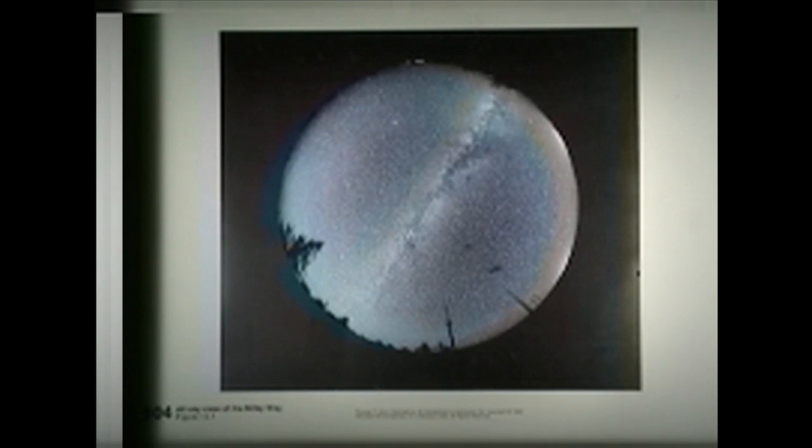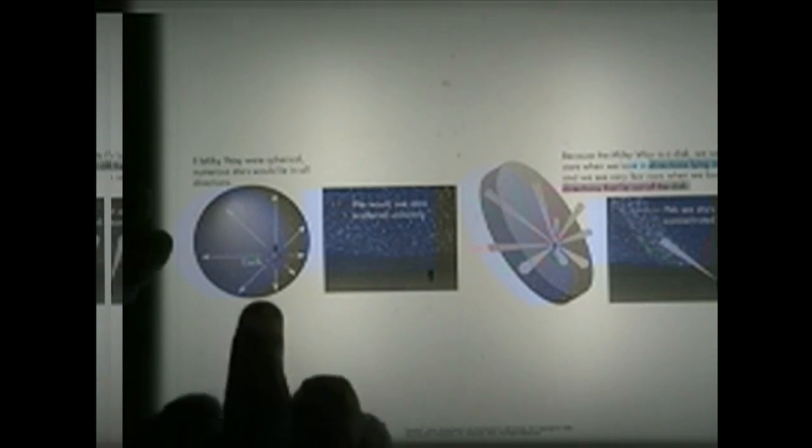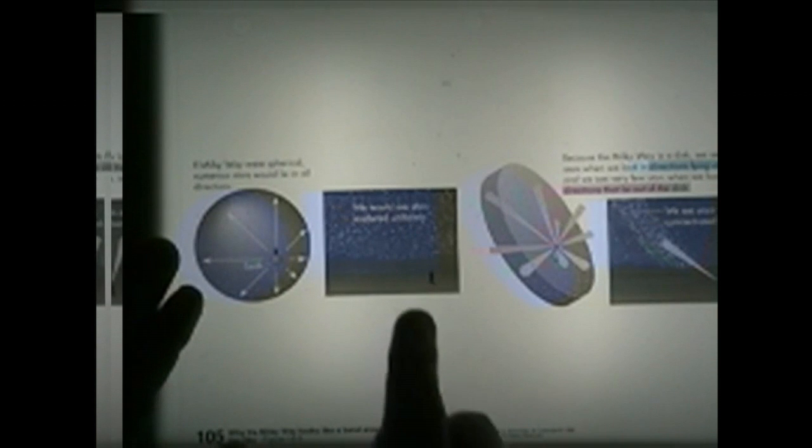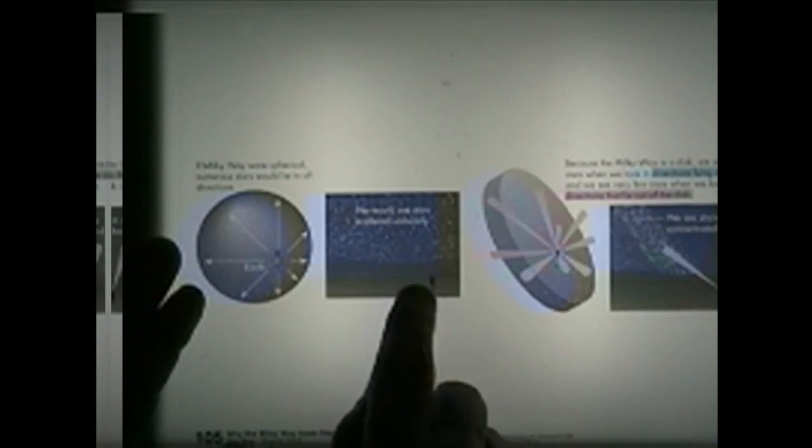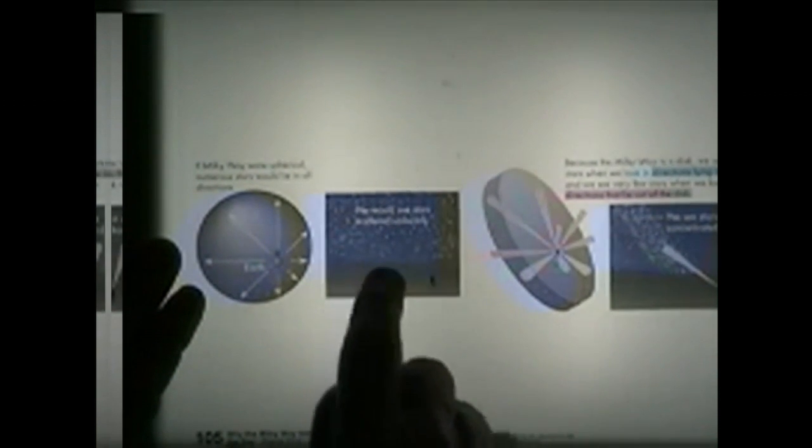The argument goes something like this. Imagine that the stars are uniformly distributed in our neighborhood. That is, you have roughly the same number of stars in any direction. If that is so, then when you look at the night sky, you would see the same number of stars regardless of the direction in which you look.